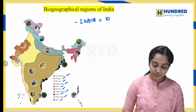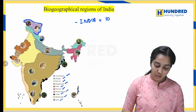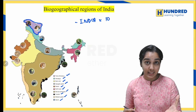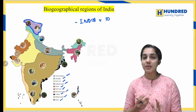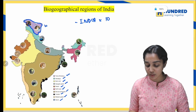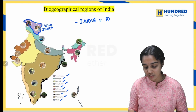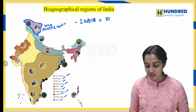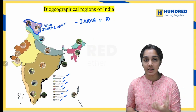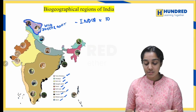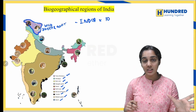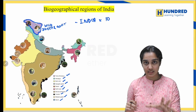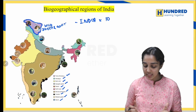The first zone is the Trans Himalaya. This covers Jammu Kashmir and Ladakh regions. The species present here include wild sheep and goat. It is known as the richest wild sheep in the world because of its quality. So Trans Himalaya covers the Jammu Kashmir and Ladakh region with these species.